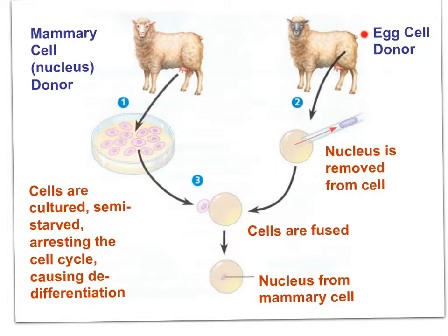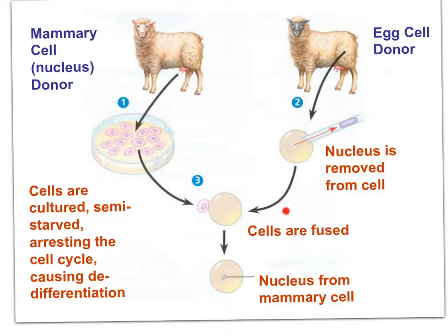One animal donates a differentiated cell — in this case from the mammary gland. The other animal donates an egg cell, but the nucleus has been removed. The nucleus from the differentiated udder cell is starved of nutrients, which arrests the cell cycle and makes it somewhat pluripotent — causing de-differentiation. This de-differentiated nucleus is then inserted into the enucleated egg cell. An electric pulse facilitates fusion, producing a cell that will become an embryo with the DNA of the differentiated adult sheep.